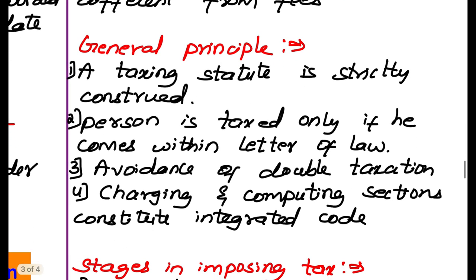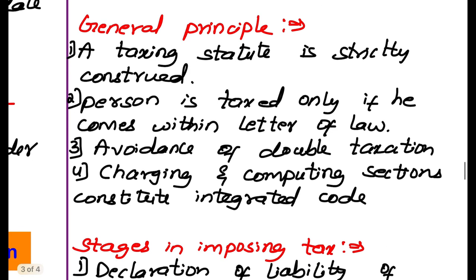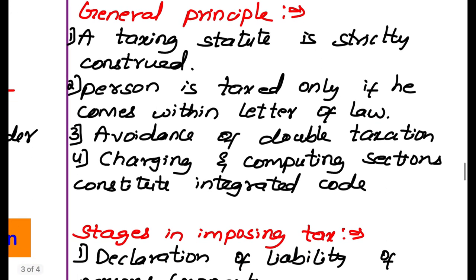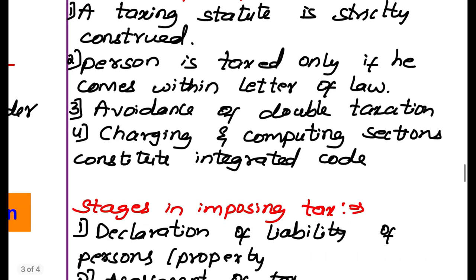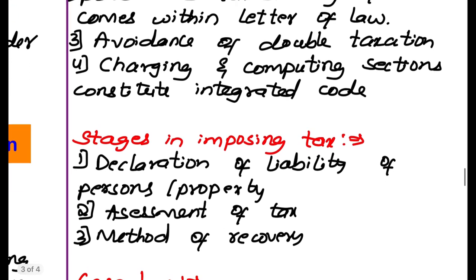General principles of taxing statutes: a taxing statute is strictly construed, meaning the statute has to be read as it is — no logical thinking can be applied. A person is taxed only if he comes within the letter of the law. Another principle is avoidance of double taxation — a person cannot be taxed twice. Charging and computing sections constitute an integrated code: the law should contain both the charging of the tax and how to compute it. If the computing section is missing, then the tax cannot be charged.